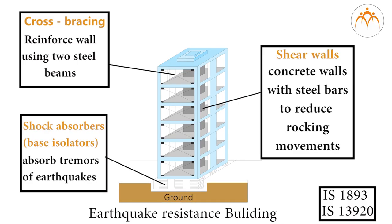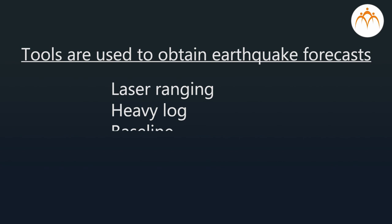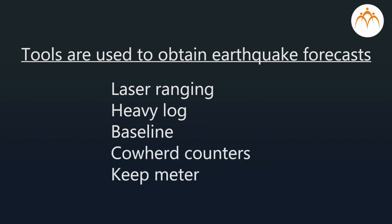In India, an institute has given standard criteria for earthquake-resistant design of structures. The institute has issued IS 1893 as a guideline on how to build structures that will withstand the shocks of an earthquake. Several tools are also used to obtain earthquake forecasts, such as laser ranging, heavy log baseline instruments, and counter meters, among others.